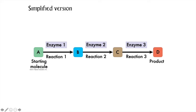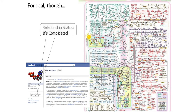A metabolic pathway at its simplest looks something like this. The pathway begins with molecule A and ends with molecule D. There are three steps from A to D, each catalyzed by a different enzyme. In reality, the sum of all chemical reactions is enormously complex — many pathways and cycles occurring, and they're all interconnected with each other.